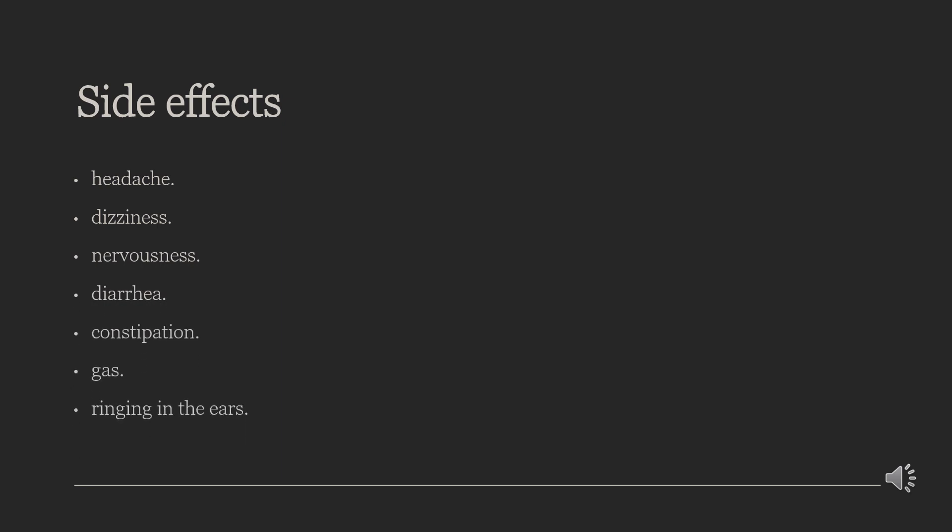Side Effects. Some common side effects of Sulindac are: headache, dizziness, nervousness, diarrhea, constipation, gas, and ringing in the ears. Sulindac may cause other side effects. Call your doctor if you have any unusual problems while taking this medication.